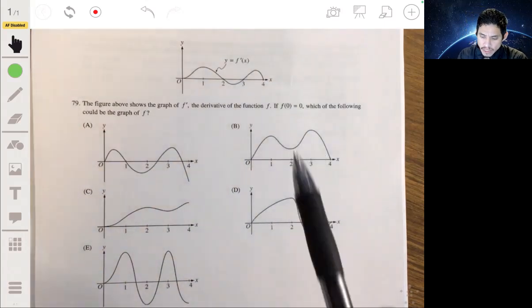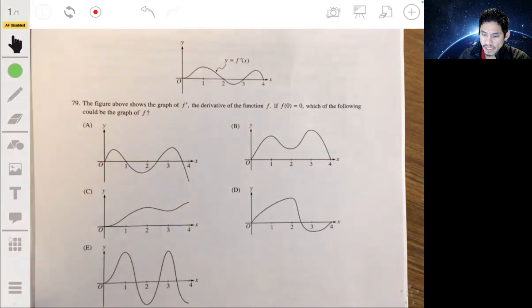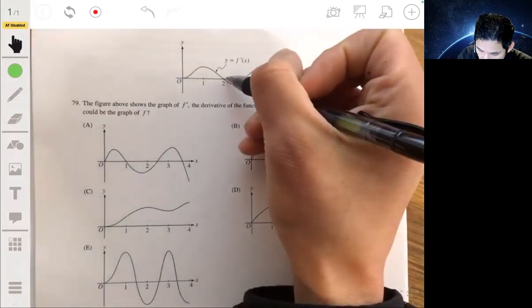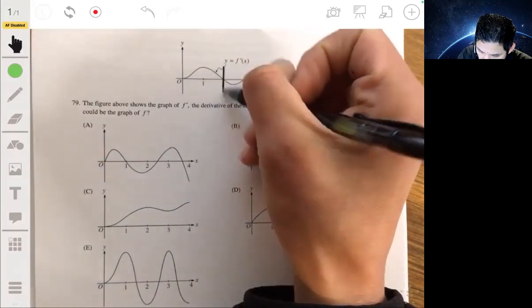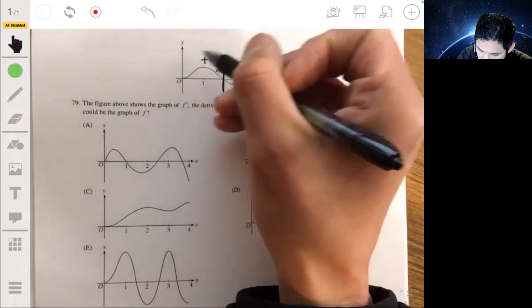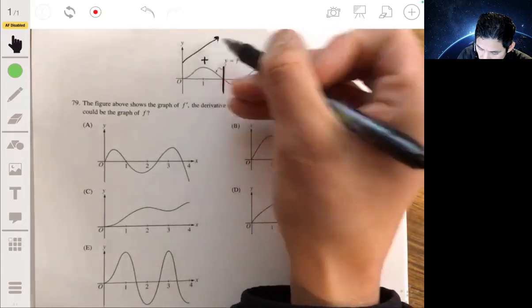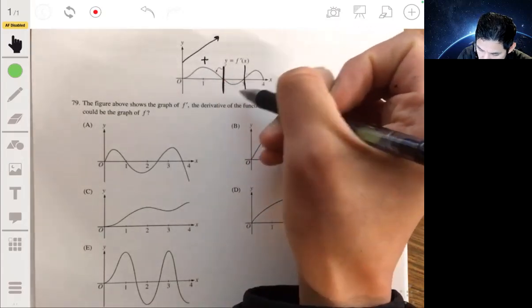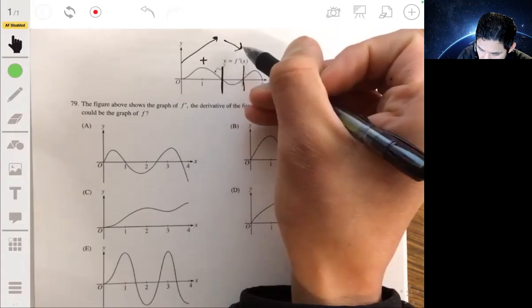The key here is to recognize that when f prime is above the x-axis it's positive, meaning the function f is increasing. When it's below, it's decreasing, so it's going down.